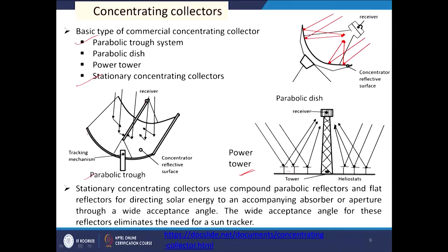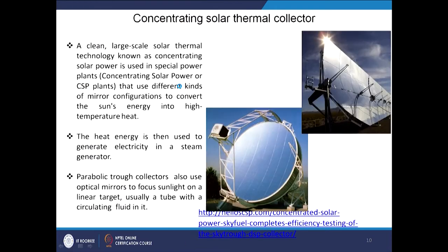Apart from tracking concentrators, there are stationary concentrating collectors. These use compound parabolic reflectors and flat reflectors to direct solar energy to an accompanying absorber or aperture through a wide acceptance angle. Due to this wide acceptance angle, these reflectors eliminate the need for a sun tracker. Photographs show how the parabolic disc focuses to a point and the parabolic trough concentrates to a tube.